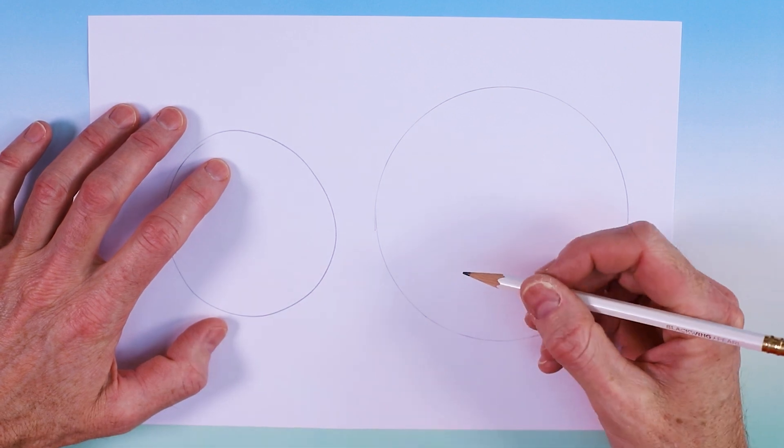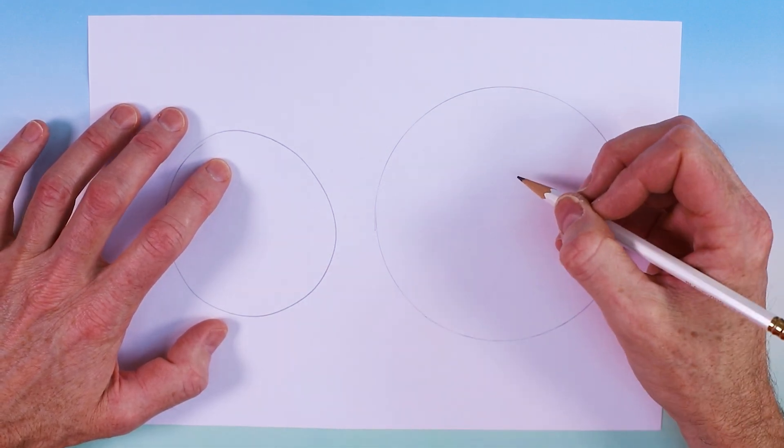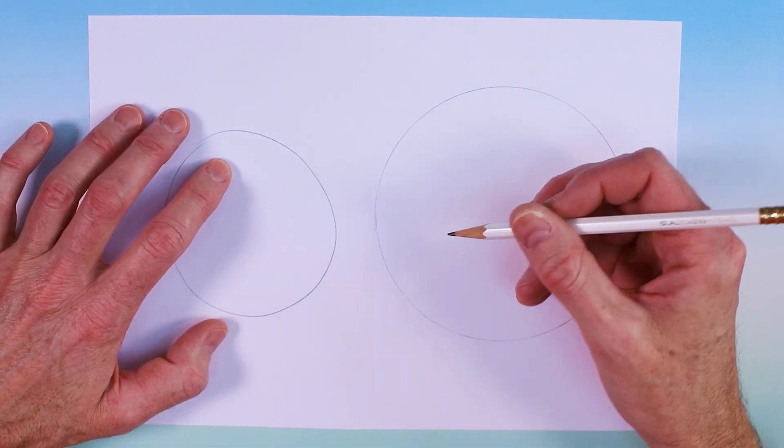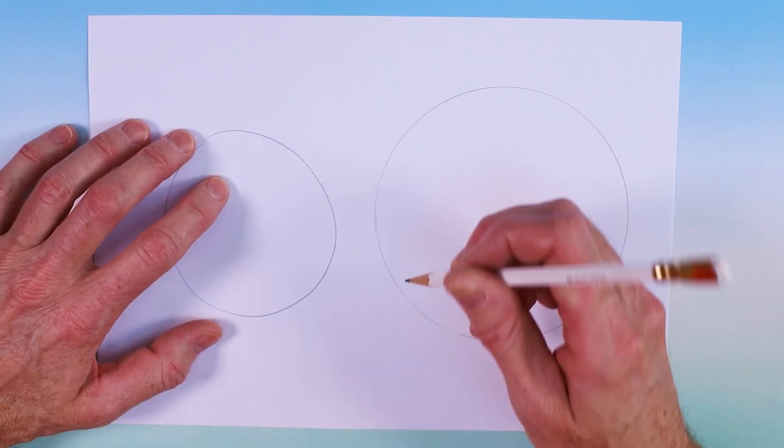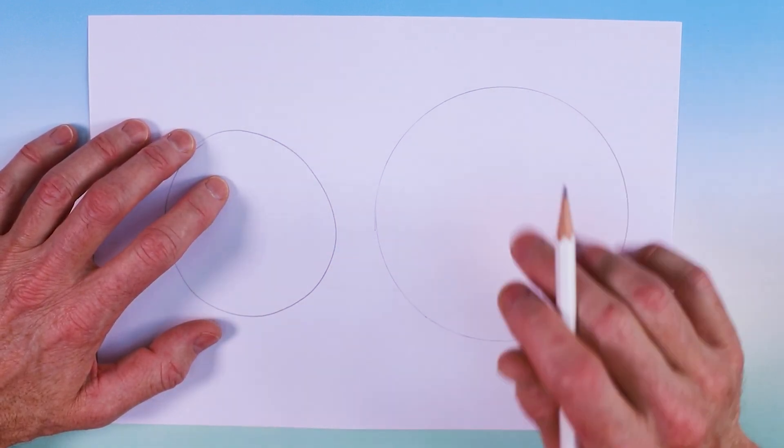Now there is a secret way to draw a perfect circle freehand just using pen and paper, which I will show you when we draw the elephant.